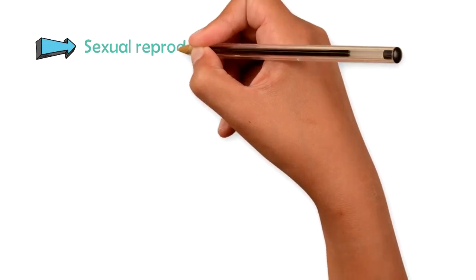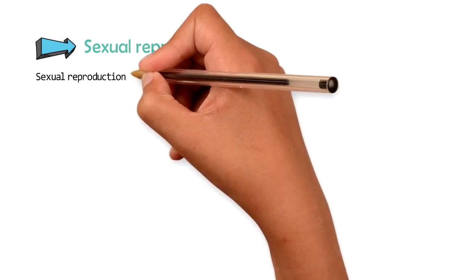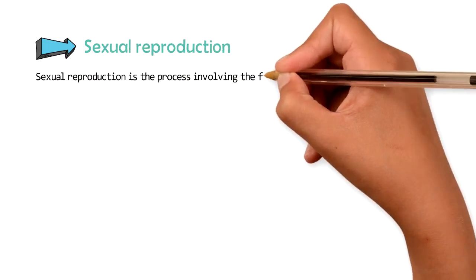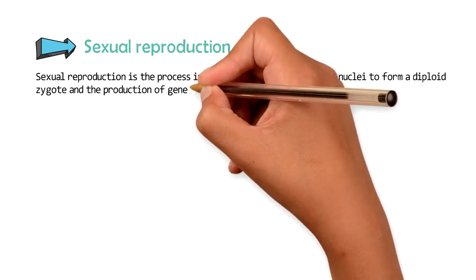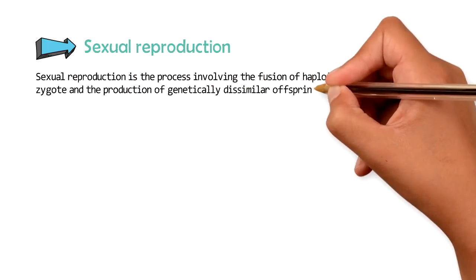Sexual reproduction. Sexual reproduction is the process involving the fusion of haploid nuclei to form a diploid zygote and the production of genetically dissimilar offspring.